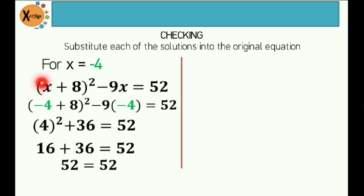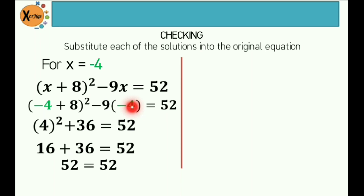For x is equal to negative 4, write the original equation: quantity x plus 8 squared minus 9x is equal to 52. Then substitute the value for x: quantity negative 4 plus 8 squared minus 9 times negative 4 is equal to 52. The sum of negative 4 and 8 is positive 4, then squared is positive 16. Negative 9 times negative 4 is positive 36. Then 16 plus 36 is 52. So 52 is equal to 52 — therefore, this is a solution.